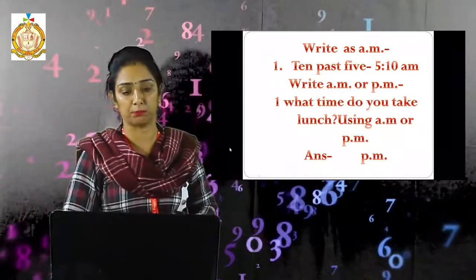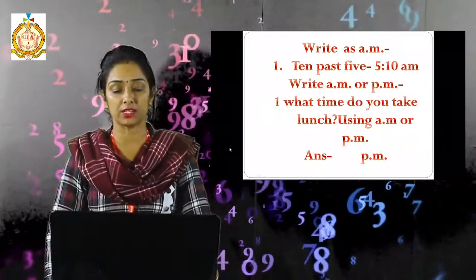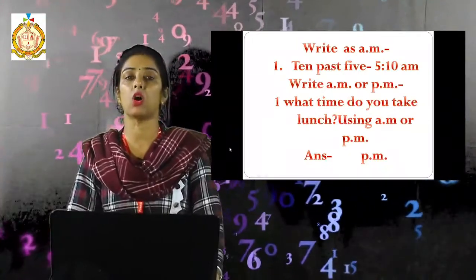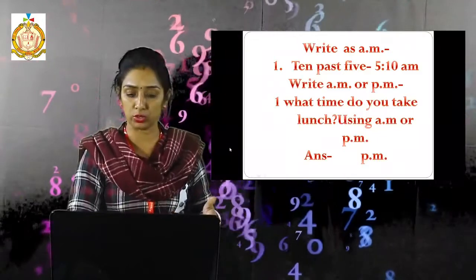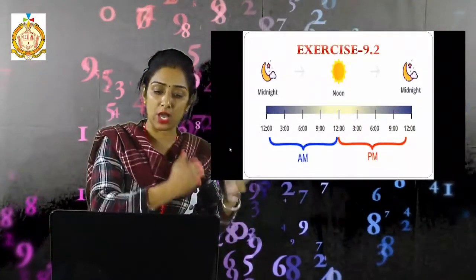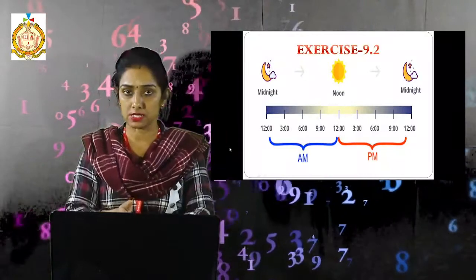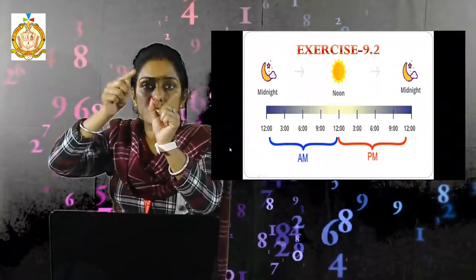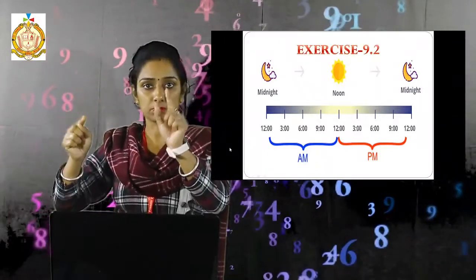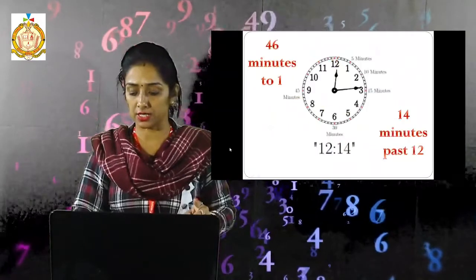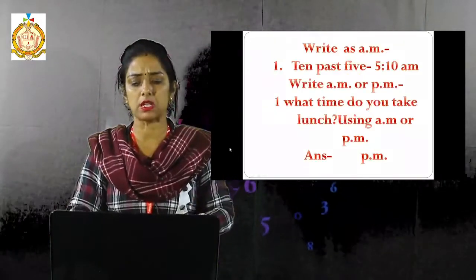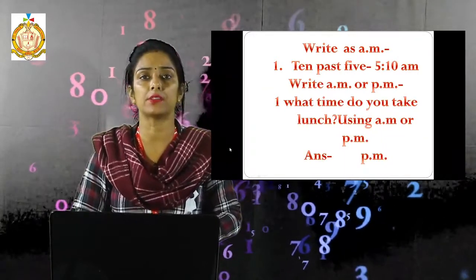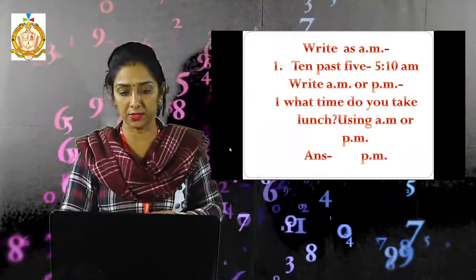What time do you take lunch — using AM or PM? Midnight to noon is AM, and from twelve noon onward is PM. We take lunch approximately at two o'clock, so we write that time as 2:00 PM.